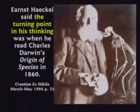Ernst Haeckel, the German professor from Jena University, made up this entire idea in 1869. Darwin's book came out in 1859 and was translated to German the next year. Haeckel read it and said, 'What a great theory — if only we had some evidence.' Nine years later they still had no evidence, so Haeckel decided to make some.